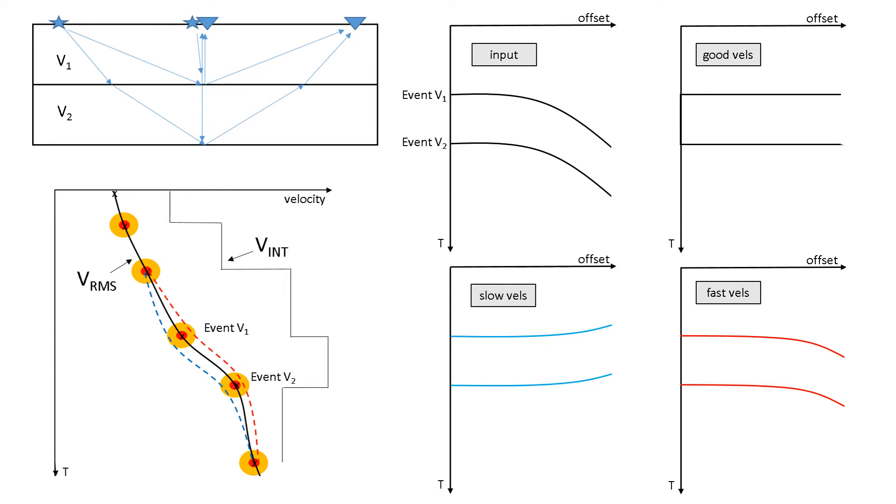These semblances correspond to the velocities where we flatten together prior to stack. If we pick the velocities correctly, we'll get an event kind of like this in the top right where I say good velocities. Everything's flat, and when we add up along here horizontally, we get a nice sharp reflector.